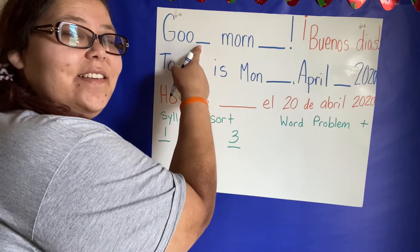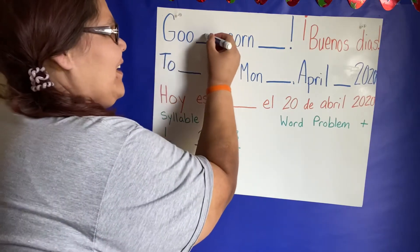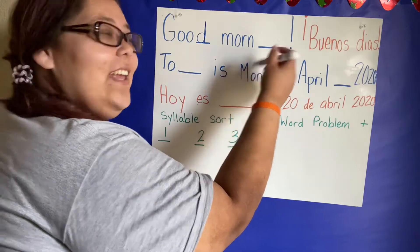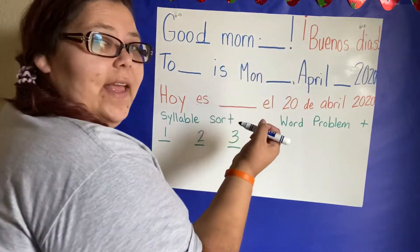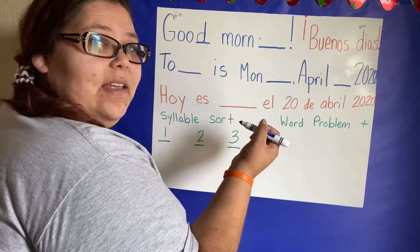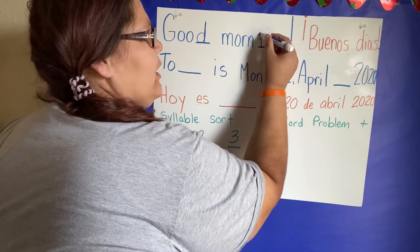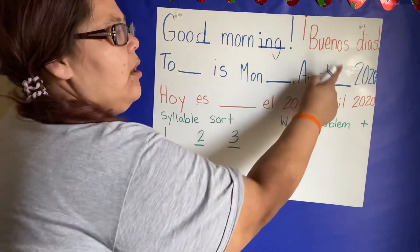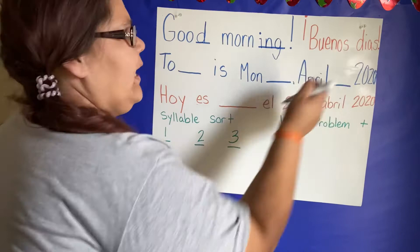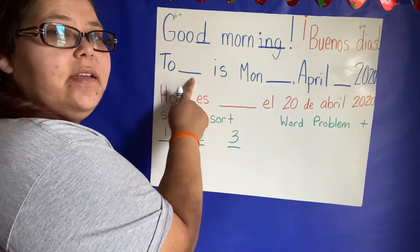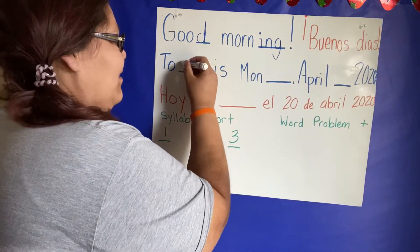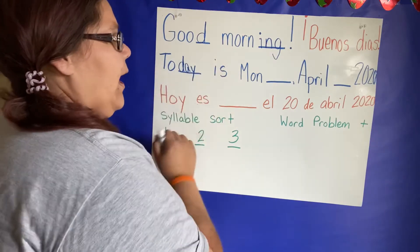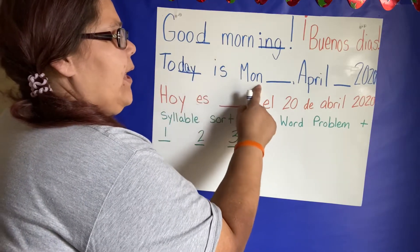What's missing? D. Mourning. And how do we say ING? I-N-G. I-N-G. Good morning. Buenos dias. Today. D-A-Y is Monday.